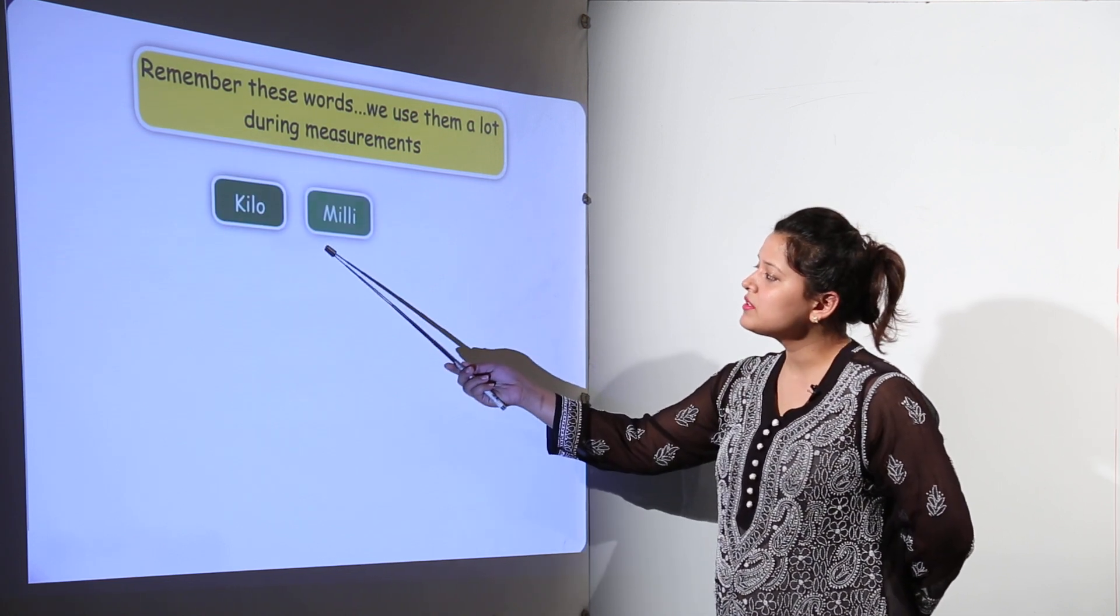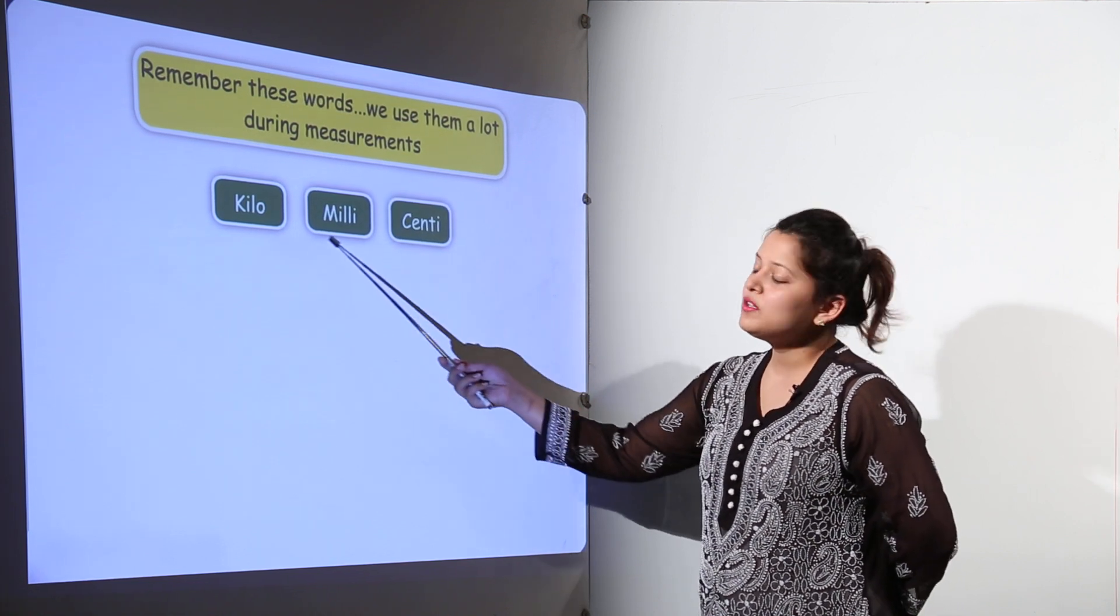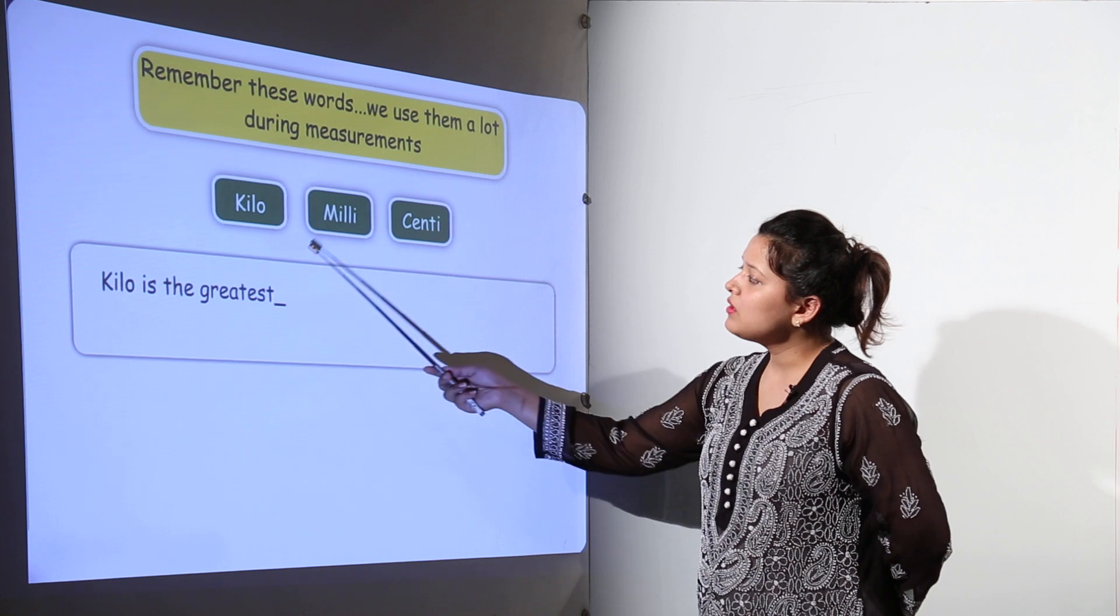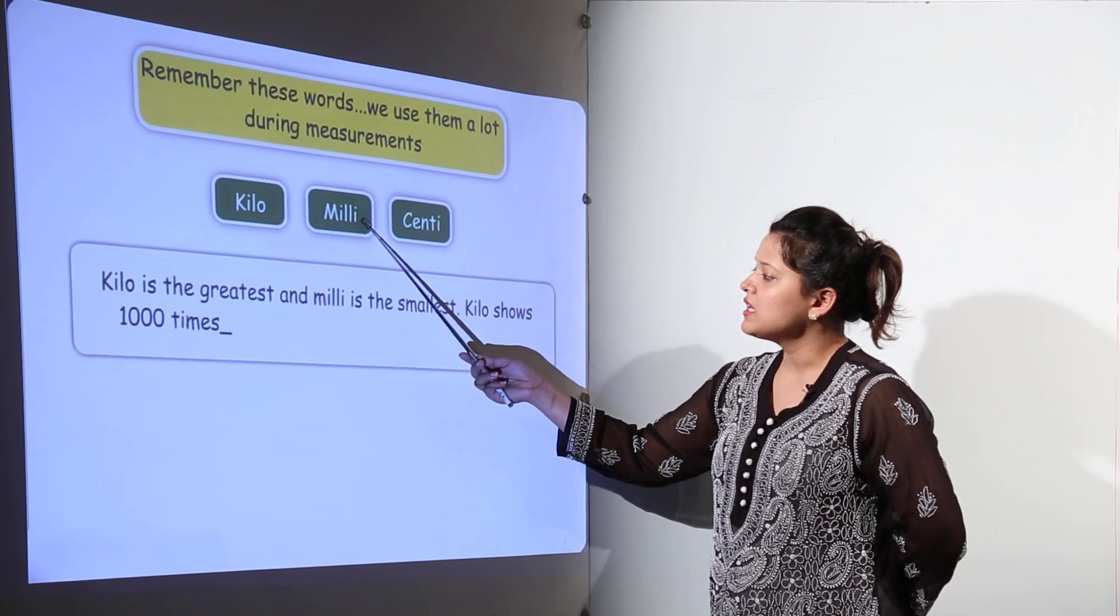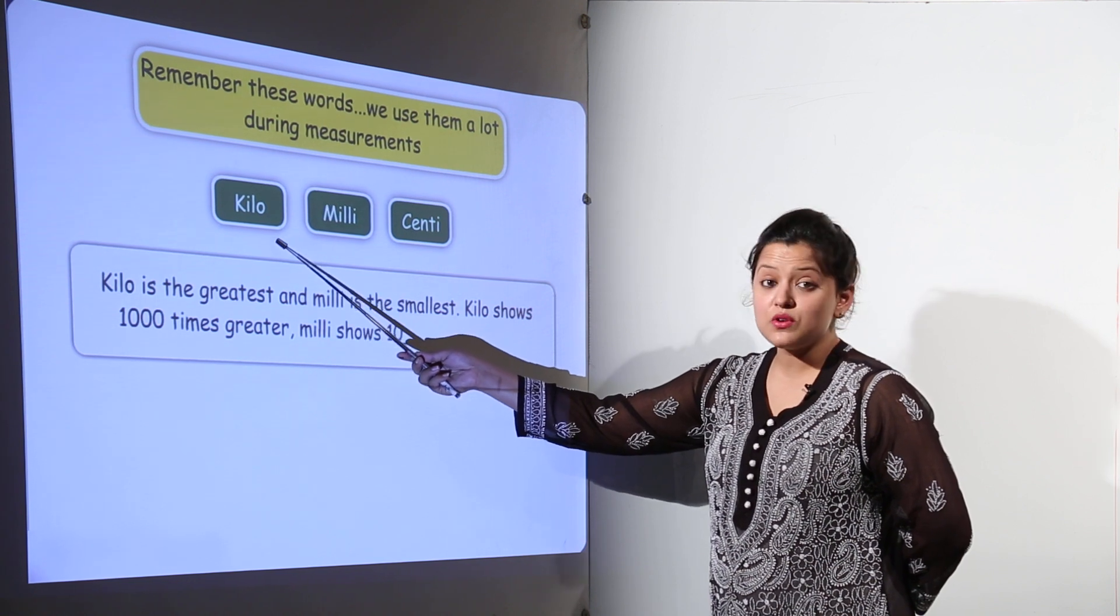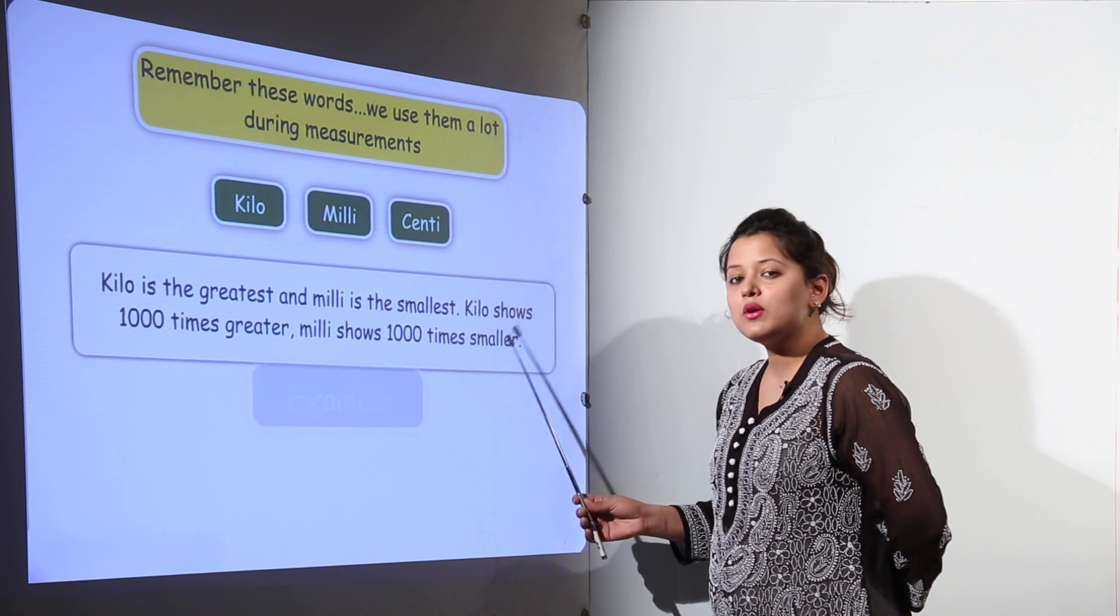That is kilos, milli and centi. What are the meaning of these three words? Kilo is the greatest out of the three and milli is the smallest. Kilo will be showing one thousand times greater value and milli shows one thousand times smaller value.